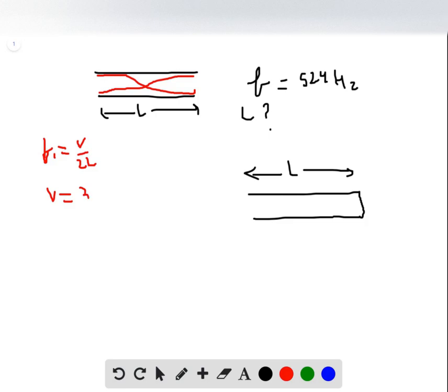F is given as 524 Hertz, so we can find the length. L = V/(2F₁). Putting in the values for V and F, the length we find is 0.328 meters. That's the length of the pipe.